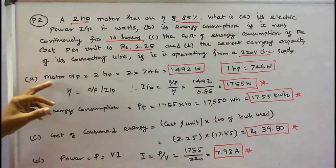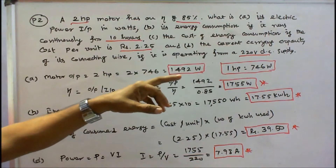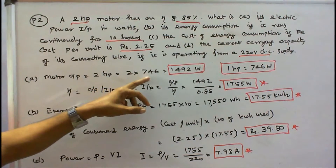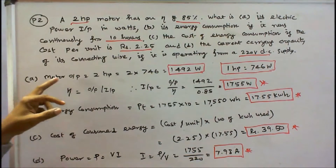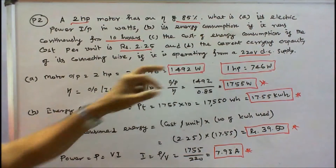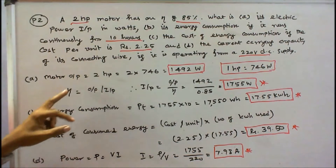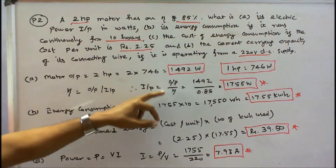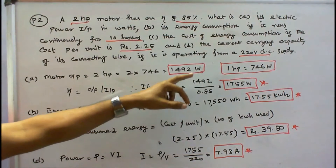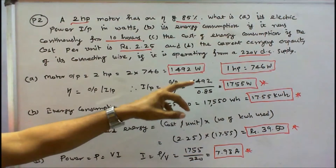The output of the motor is given as 2 hp. One horsepower is equal to 746 W, therefore 2 into 746 is equal to 1492 W. Motor output is 1492 W. We know efficiency equals output by input. Efficiency is given as 85%, so input is equal to output divided by efficiency: 1492 divided by 0.85, that is equal to 1755 W.